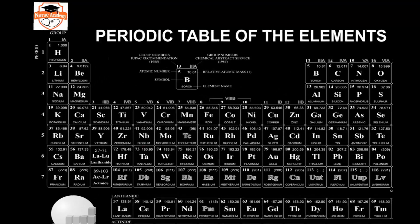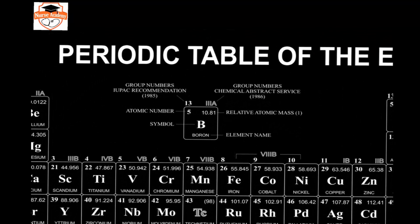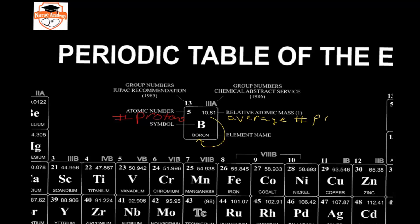As we look at the periodic table, we'll want to look at what information is included in a cell. The number at the top, often in the darkest font — the smaller number without decimal places — is the atomic number. The atomic number is the number of protons in the element. This second number, which has decimal places and is often at the bottom underneath the name of the element, is the relative atomic mass or average atomic mass. This is the number of protons plus neutrons, but for a mixture of isotopes.